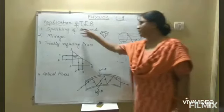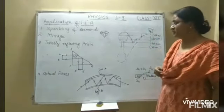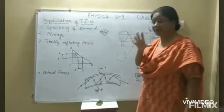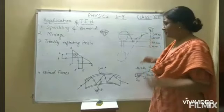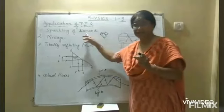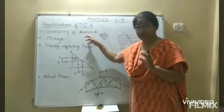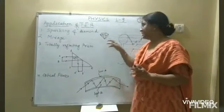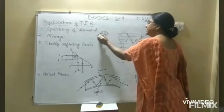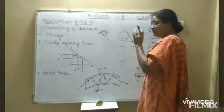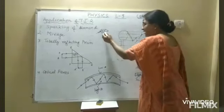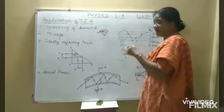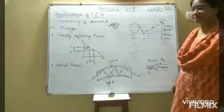The first application of total internal reflection is the sparkling of diamond. The refractive index of diamond is very high — 2.42. As the refractive index is more, the critical angle will be less. So when a ray of light enters a diamond, due to the small critical angle, the ray of light gets totally internally reflected so many times, and that is why the diamond sparkles so much.